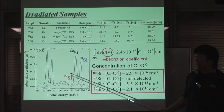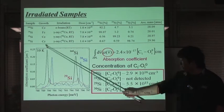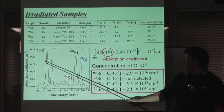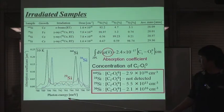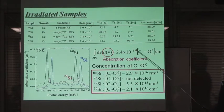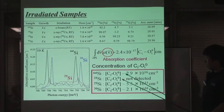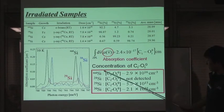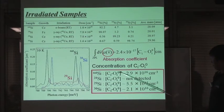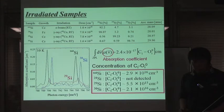This figure shows a spectrum of optical absorption measurement. The vertical axis is photon energy and the horizontal axis means absorption coefficient. From these absorption coefficients, we can estimate the concentration of carbon-oxygen defects in silicon using this equation. The concentration in each sample is shown here. In the case of 28Si, the signal is too weak to detect and we cannot estimate the concentration.